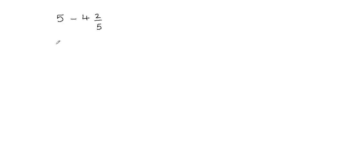I'm going to write 5 as 5 over 1. Remember that whenever you have a whole number and you want to write it in the form of a fraction, you can always set the denominator equal to 1 and you don't change the value of it, because 5 divided by 1 is still going to give you 5.